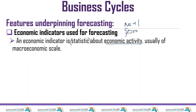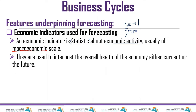Economic indicators are usually of macroeconomic scale. Macro means big, so when we study macroeconomics we are studying the economy as a whole — not individual businesses or households, but the whole economy. These indicators cover the whole economy as a whole.